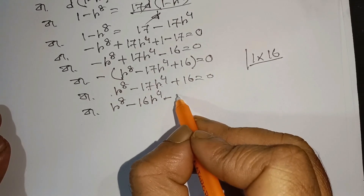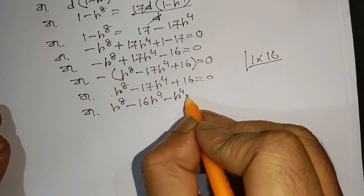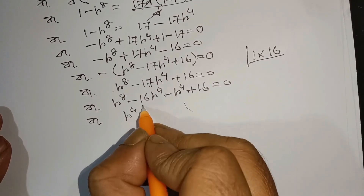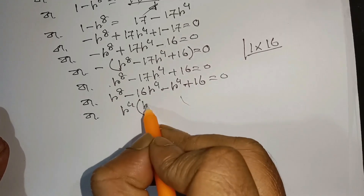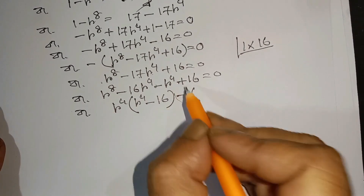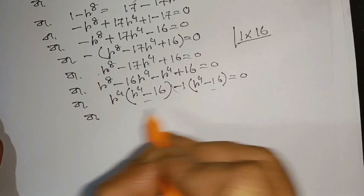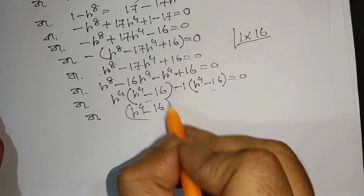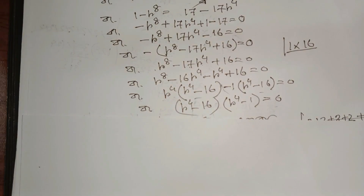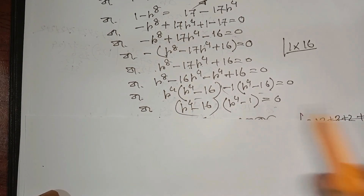R to the power 4 from the power 4. So r to the power 4 minus 1 is equal to 0, which gives us r to the power 4 equals 1. So we have two solutions, eta 0 equals 2 and eta equals 2.